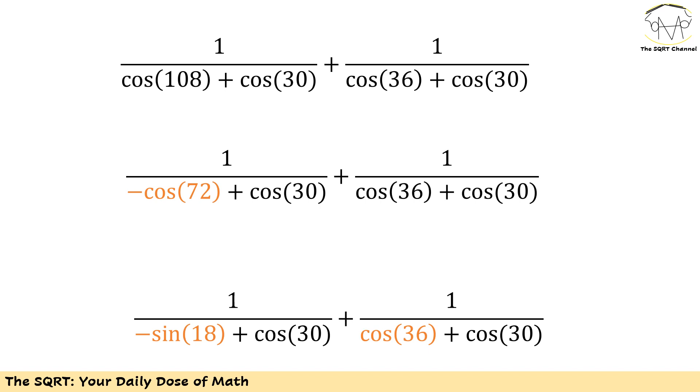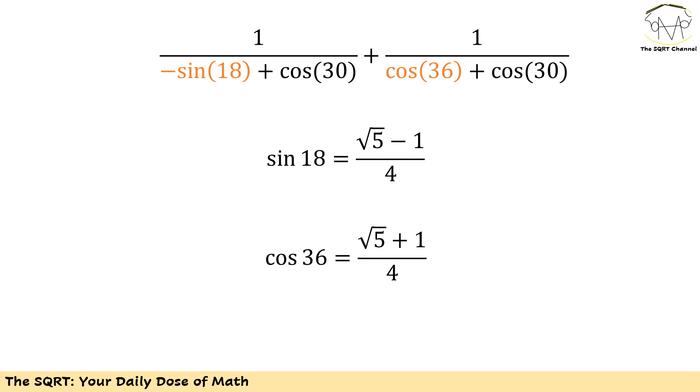We have sin 18 and cos 36. Now note that we already have sin 18 as (√5 - 1)/4. If you don't know that, remember 18 times 5 is 90 and you can just use this 5 times 18 equals 90 to find sin 18. When sin 18 is known we can find cos 36, and it's basically (√5 + 1)/4. From here we just need to replace.